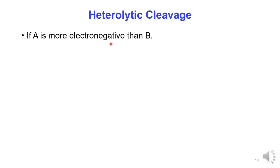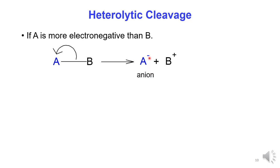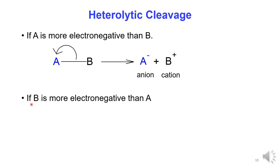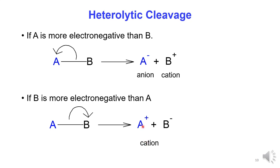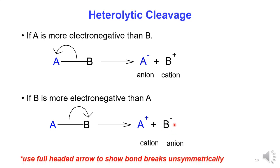Examples of heterolytic cleavage: If atom A is more electronegative than atom B, a polar bond is broken unsymmetrically. Both bonding electrons are transferred to atom A to produce an anion (A negative charge) and a cation (B positive charge). If atom B is more electronegative than atom A, both bonding electrons are transferred to atom B, so A becomes the cation (A positive charge) and B becomes the anion (B negative charge). A full-headed arrow is used to show the bond breaking unsymmetrically.